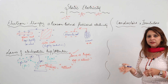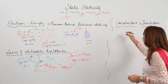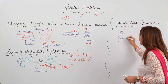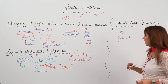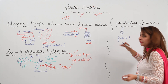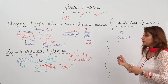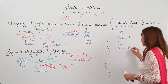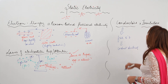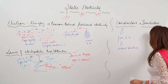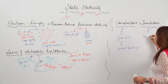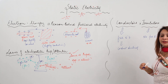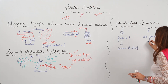Now coming to the next topic: conductors and insulators. Conductors are those which have free electrons, and due to these free electrons there can be a transfer of electrons — they conduct electricity. Insulators are those which possess no such free electrons, meaning there cannot be a transfer of electrons, and that is why they do not conduct electricity.